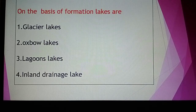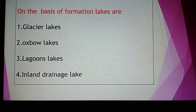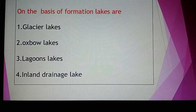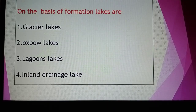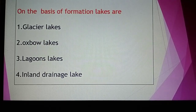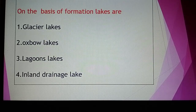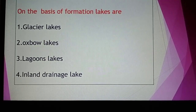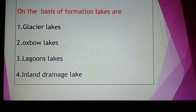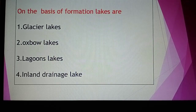Oxbow lakes form when rivers travel from the upper course to the lower course. The river develops U-shaped bends called meanders. When a part of the main river gets separated, forming a separate land body of water, that is called an oxbow lake. Lagoon lakes form when a part of the sea gets separated due to coral reefs or sand accumulation — that separated part is called a lagoon lake. Inland drainage lakes are those formed by human activity within our own land area.